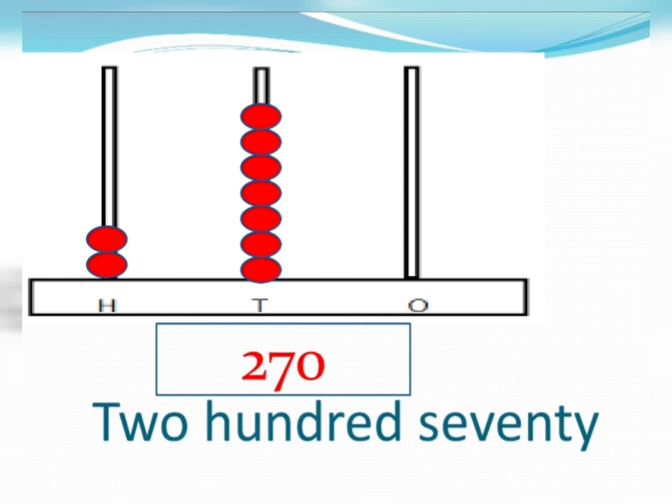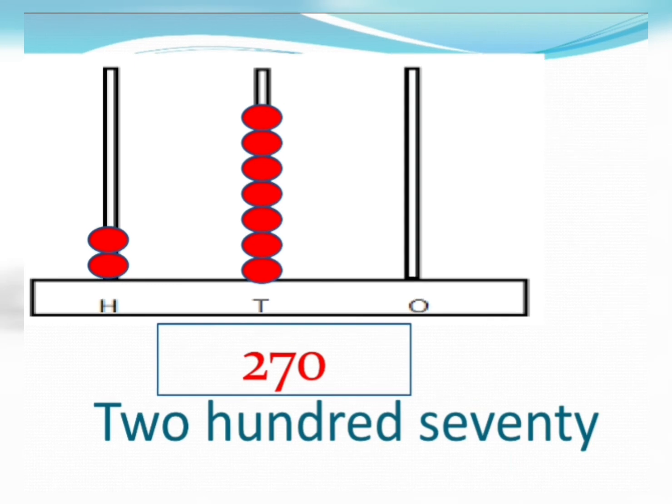Students, abhi next example dekho. Next example me hundred pe kitni beads hai? Two beads. Two beads, ok? Then tens pe one, two, three, four, five, six, seven. Seven beads. And ones me zero bead. Humne kya kya? Hundred pe two beads hai, toh two likh diya. Tens mein seven beads hai, toh seven likh diya. Once mein zero bead hai, toh zero likh diya. Number kya ban gaya? Two hundred seventy. So, niche humne hai hai hai hai, toh two hundred seventy ki spelling likh di.